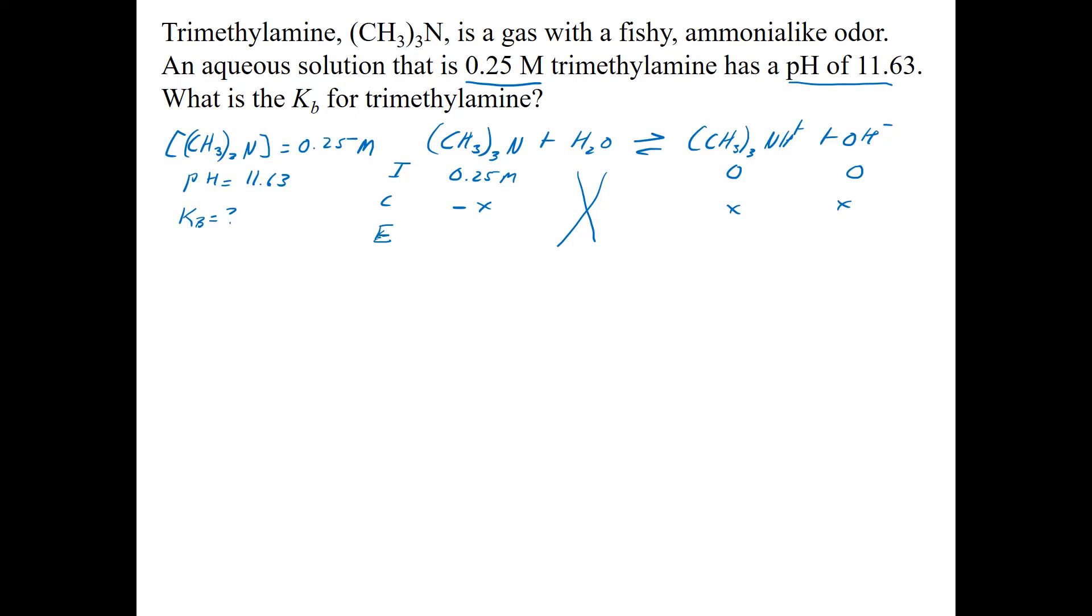So we have to start out with the formula that pH plus pOH is equal to 14. So I have 11.63 plus pOH is equal to 14. So pOH is 14 minus 11.63 to give me 2.37.